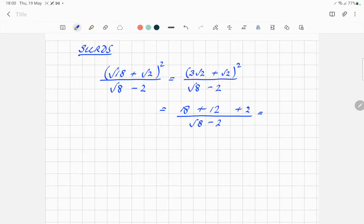The bottom stays as it is for the moment. We haven't got there yet. And so that is simply 32 over root 8 minus 2. The next thing to do is to rationalize the denominator, because we can't have roots in the denominator.